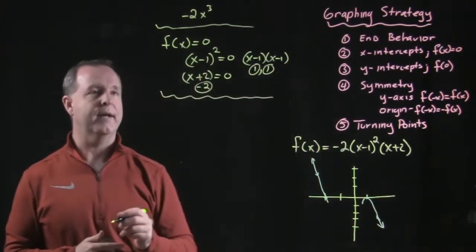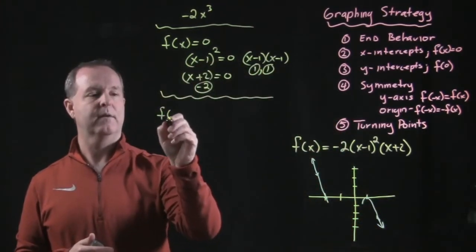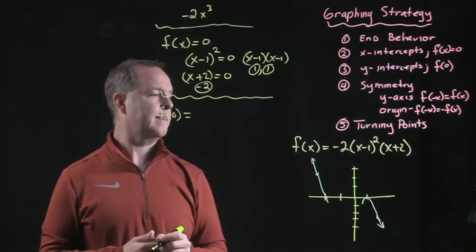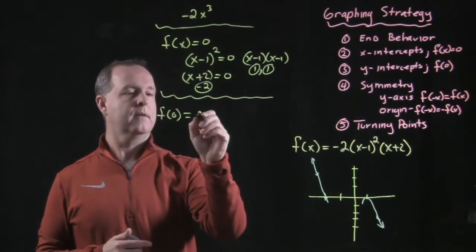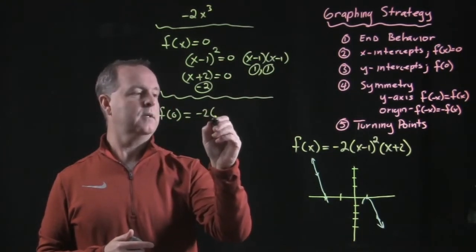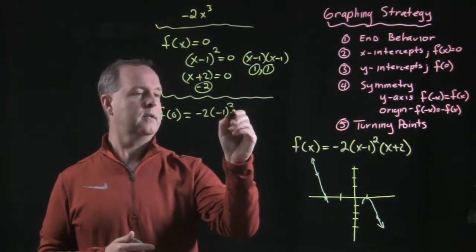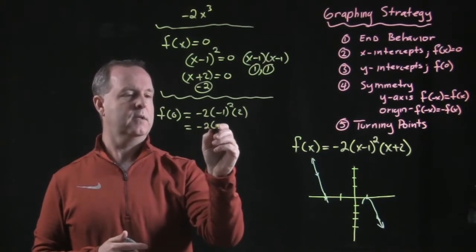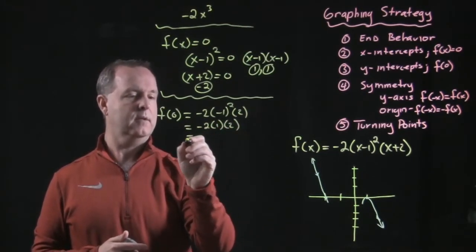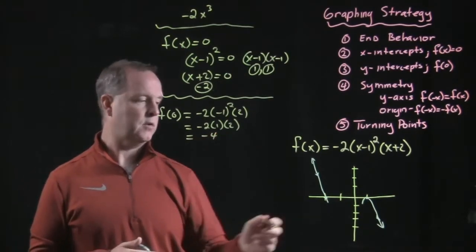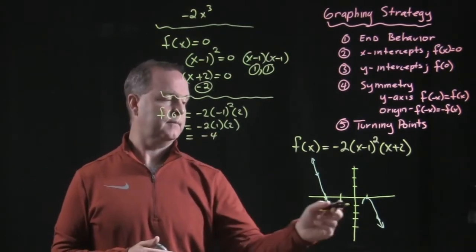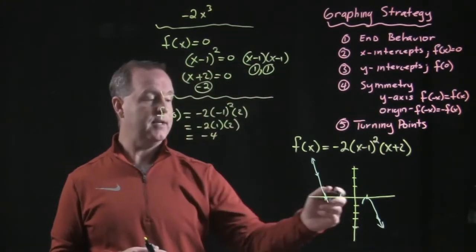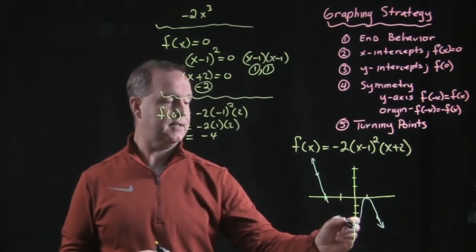Next step, let's look for its y-intercepts. Where does f of, or evaluate the function at 0? And so negative 2 times negative 1 squared times 2 equals negative 2 times 1 times 2 equals negative 4. So I have a y-intercept here down at negative 4. And now I know the connecting point here connects to there.